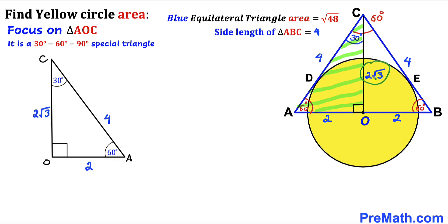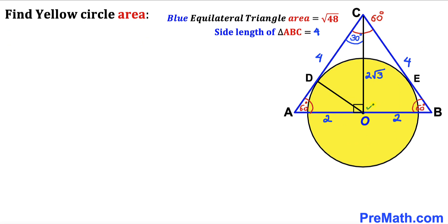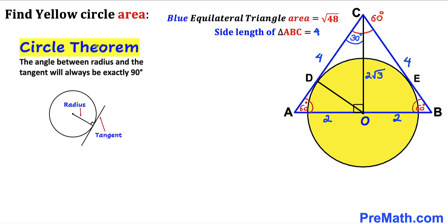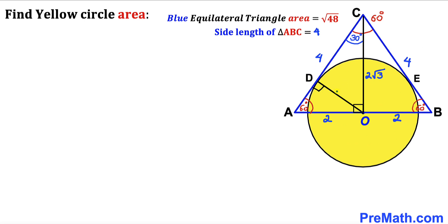Next, I've connected center O with the point of tangency D. Recall the circle theorem: the angle between a radius and a tangent is always 90 degrees. Here, OD is the radius and the side of the triangle is the tangent line, so angle ODA is 90 degrees. Let's call this radius lowercase r — our task is to find the value of r.